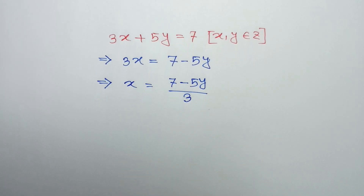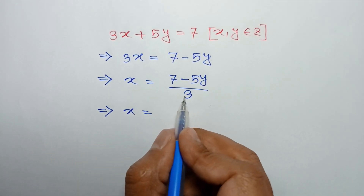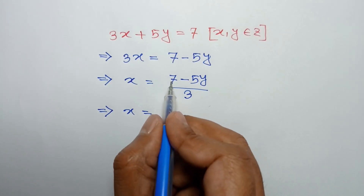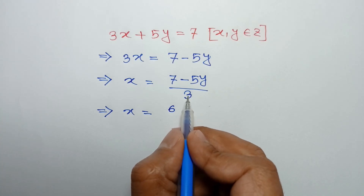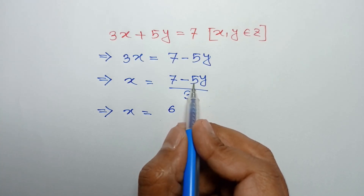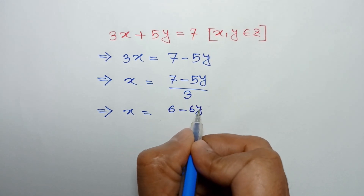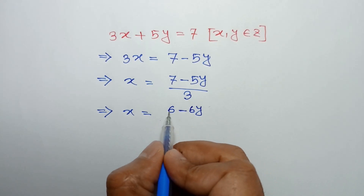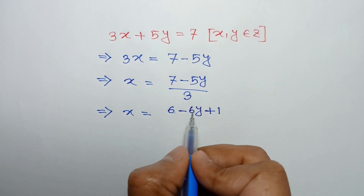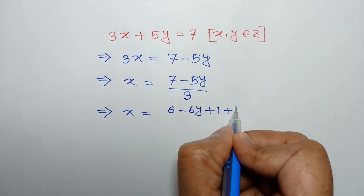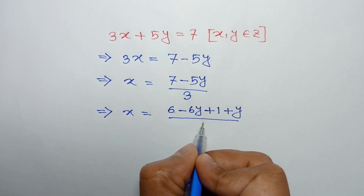The multiple of 3 nearest to 7 is 6, and the multiple of 3 nearest to 5 is also 6. So we write -6y, and to make this equal: 6 + 1 is 7, and -6y + y is -5y, all over 3.